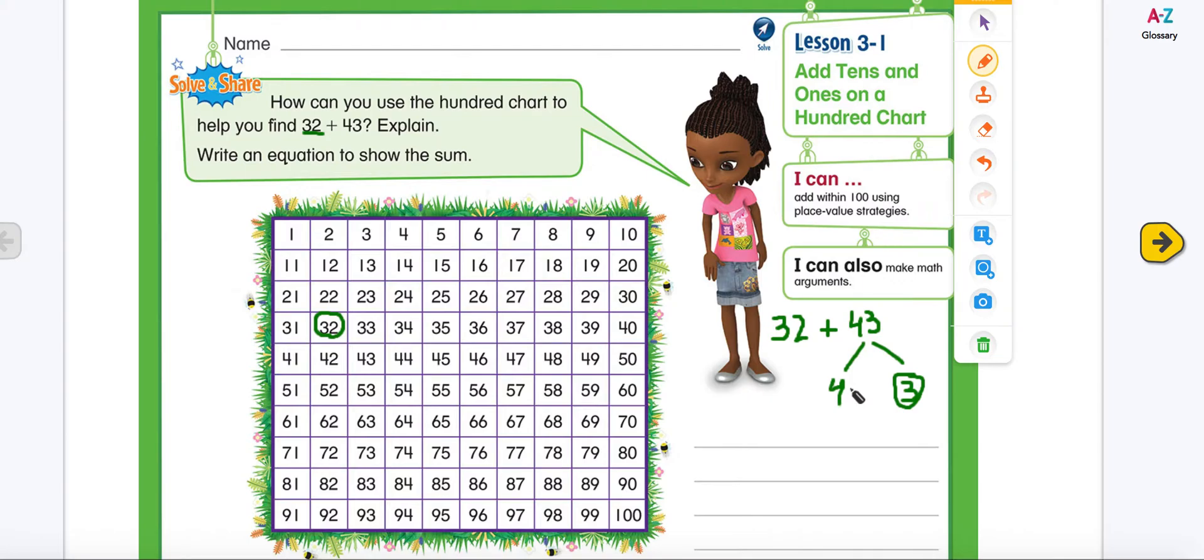So this is our place value. Like we know, the first is ones, the next is the tens place value. So it has 4 tens, that means it has 40. So now, I have to start with number 32 and I'm going to add 43 to this number.